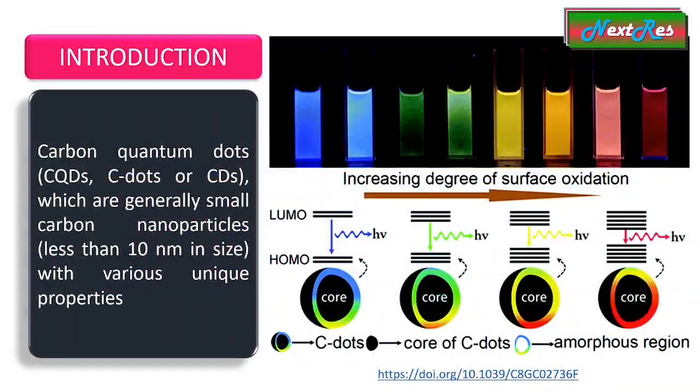For those who don't have a basic idea about carbon quantum dots, they are typically small nanometric materials having a diameter of 10 nanometers. They are often spherical or quasi-spherical in shape.